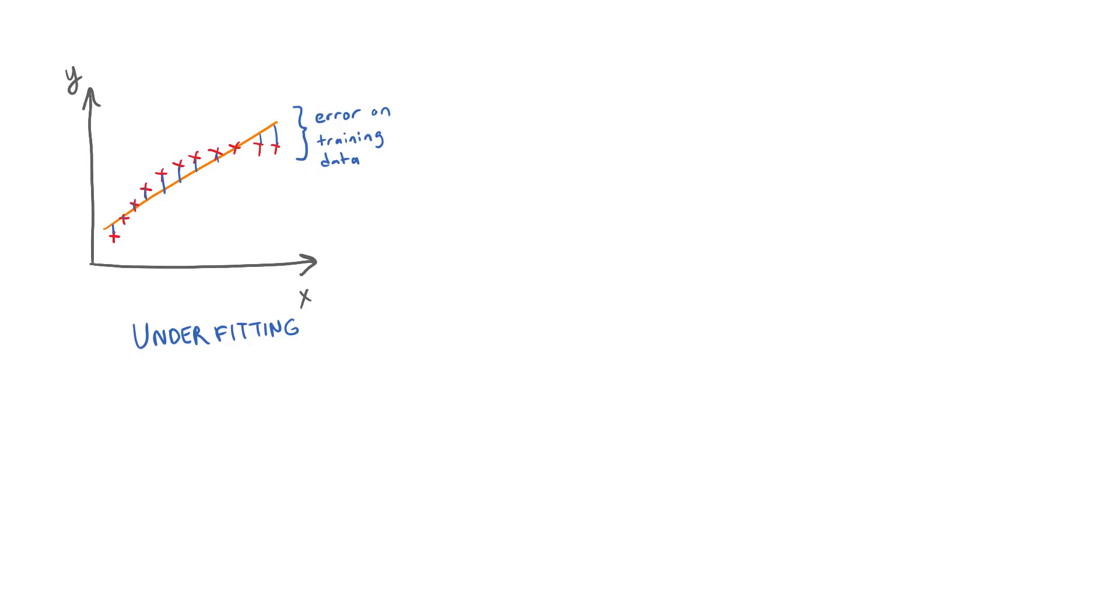To get a closer fit, we can increase the model capacity and try to fit a polynomial of a higher order. Now the function fits to the training samples almost perfectly. It has a very low bias, but it has a high variance and is unlikely to generalize well.